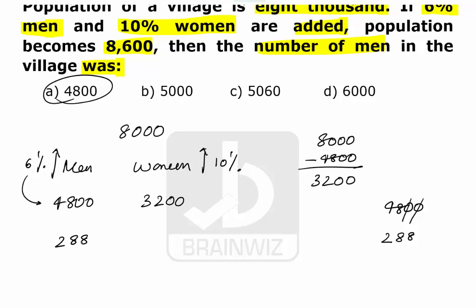Same fashion. Let us try to calculate 10% of the women were increased. 10% we have to calculate on 3200, which means very clearly 320. Now 320 women are increased.